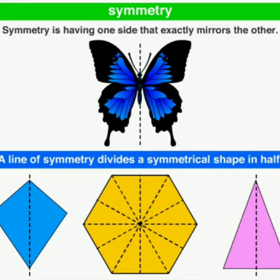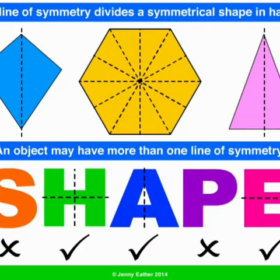Symmetry is having one side that exactly mirrors the other. A line of symmetry divides a symmetrical shape in half. In other words, if the two parts of a figure made by a line fall exactly on one another, then the figure is said to be symmetrical about that line.